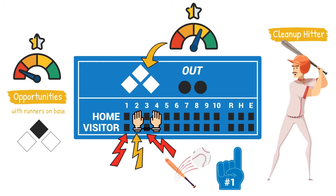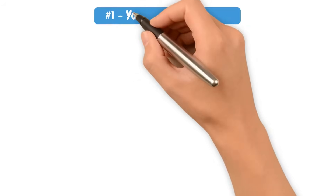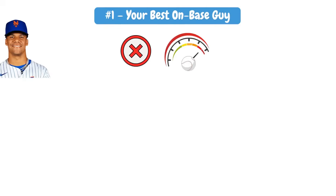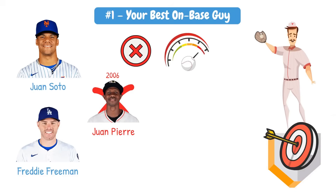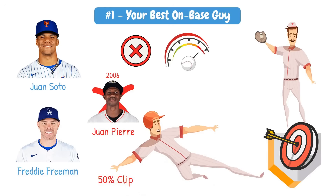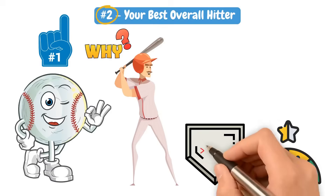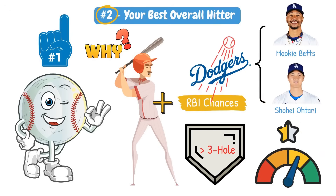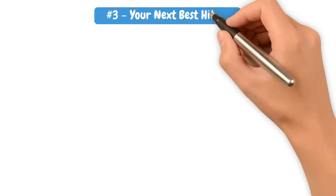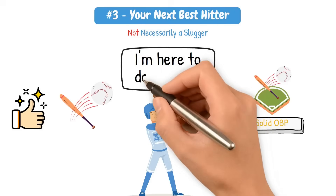Here's a modern sabermetric approach to optimizing your batting order. Your number one hitter should be your best on-base guy — not necessarily the fastest. Think Juan Soto or Freddie Freeman, not 2006 Juan Pierre. You're looking for a guy who gets on base at nearly a 450 OBP or above. Your two-hole should be your best overall hitter — yes, your best hitter should hit second, because they come to the plate more often than the three-hole and get nearly as many RBI chances. The Dodgers often bat Mookie Betts or Shohei Ohtani here for this exact reason. The three-hole should be your next best hitter — good contact, solid OBP, and some slug — cleaning up what one and two create.